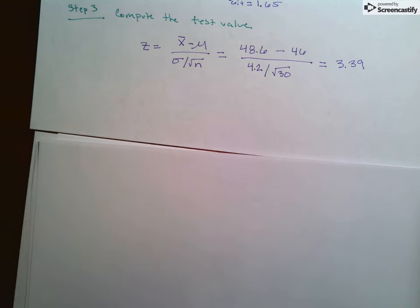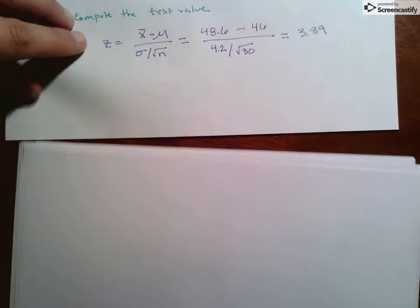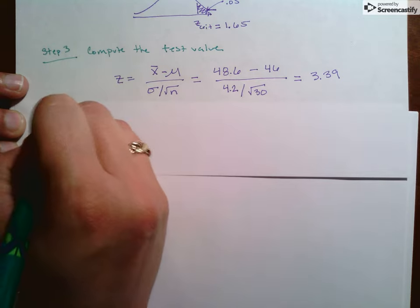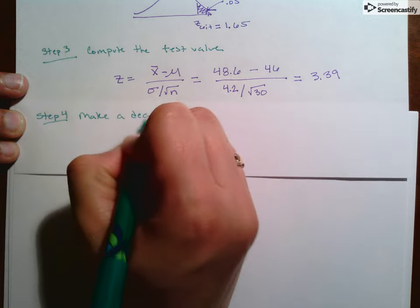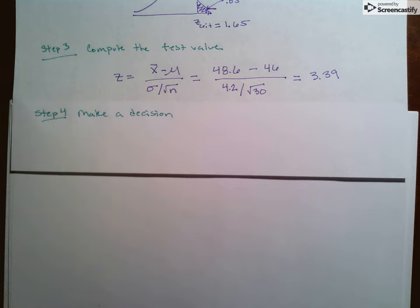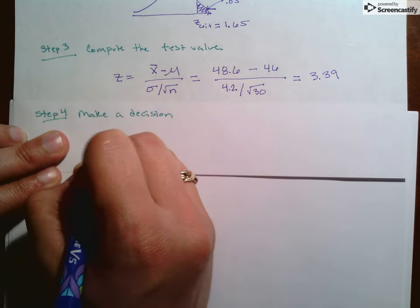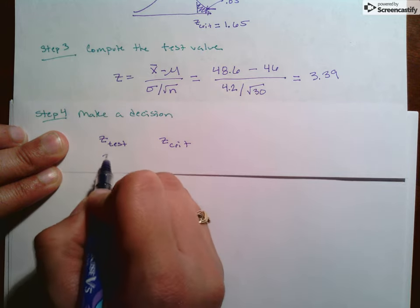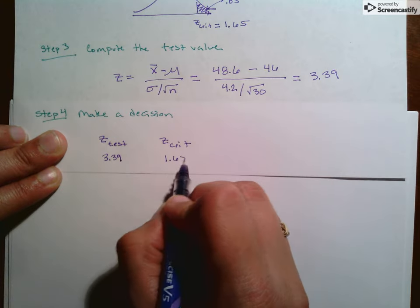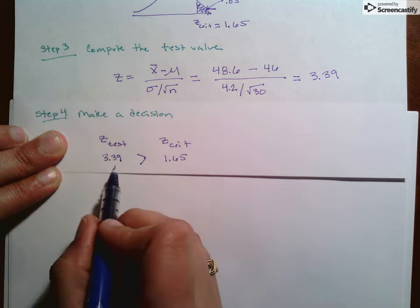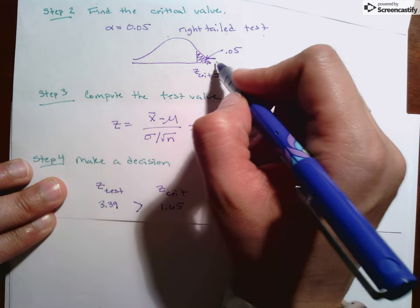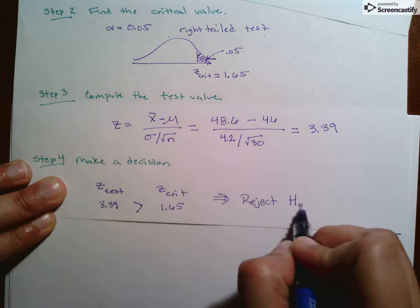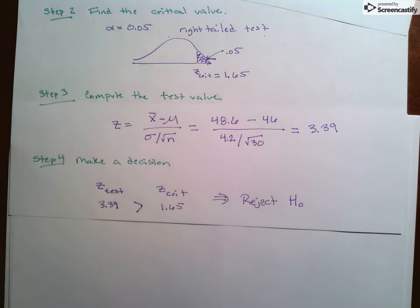Now step four, we have to make a decision. So basically you compare our Z-test to our Z-crit. Our Z-test is 3.39, and our critical value is 1.65. So this is greater than that, which means if I look at this, this 3.39 is out here on the right-hand side. So this means we have to reject our null hypothesis because our test statistic is in the critical region.